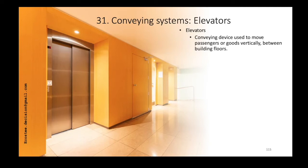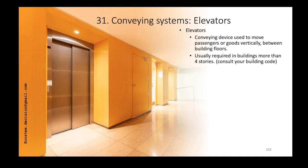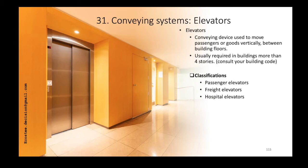In terms of building codes, when you have more than four stories you need to have at least one elevator — but check your local building code for exact requirements. There are three types of elevators: passenger elevators, freight elevators, and hospital elevators. In standard buildings you'll have passenger and freight elevators. Hospital buildings also use hospital elevators because they are larger.